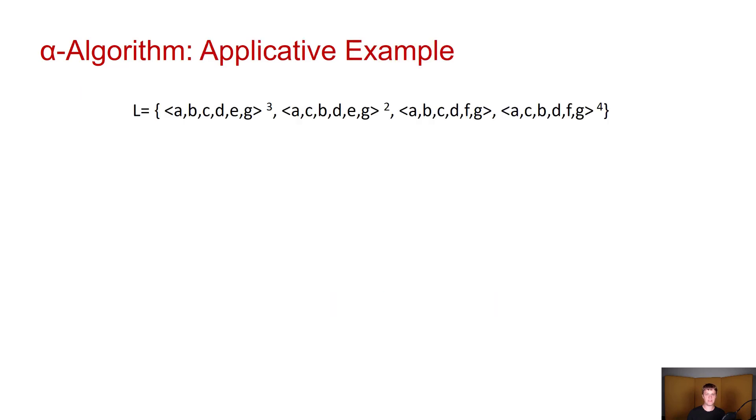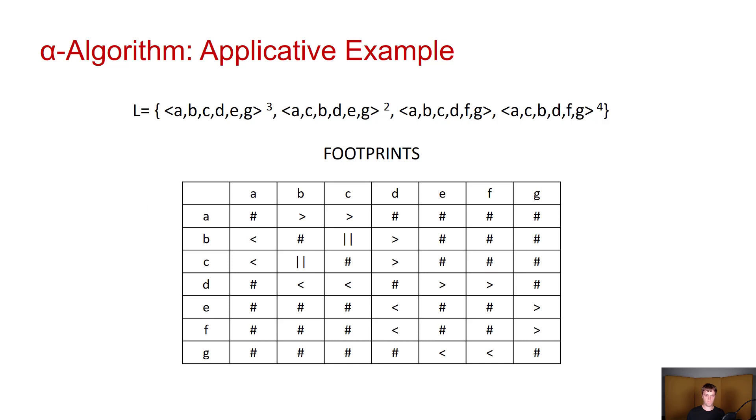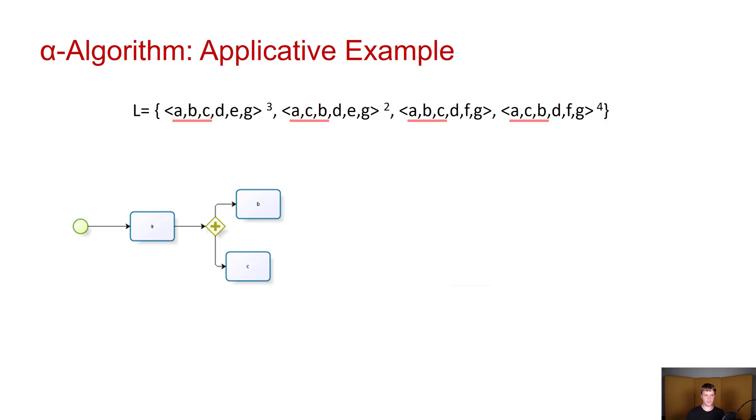But let's try to apply those patterns now in practice. This is the event log that we had before. The alphabet that we have here is simply A through G. The initial activities are A and the final activities are G. Let's take a look at the footprints that we had before and we will go through it from top left to bottom right. We see that A is followed by B, we see that A is also followed by C, and we see that B and C occur in parallel. Based on this information we can place the following elements on our process map.